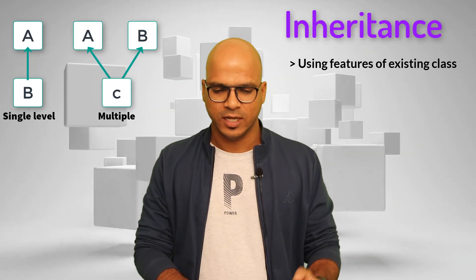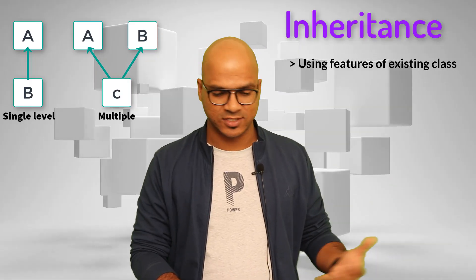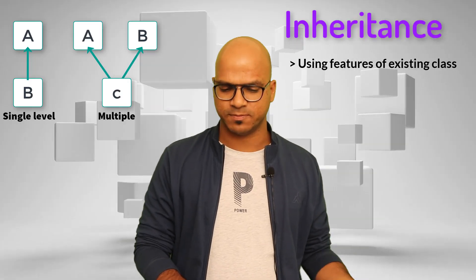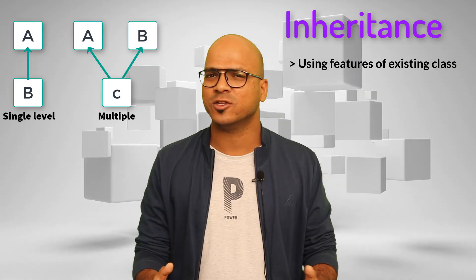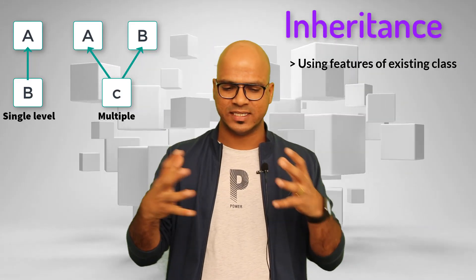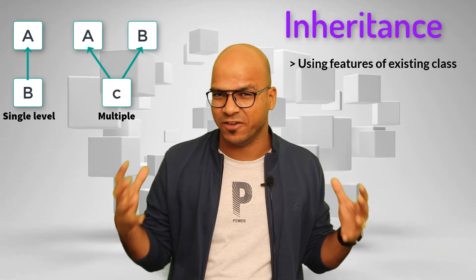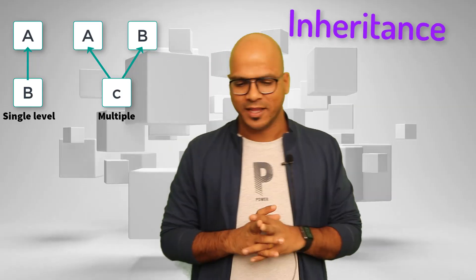In multiple inheritance we have class A, class B, and then class C which has its own features but also inherits from both A and B. So we can say C has features from all three, which makes sense.